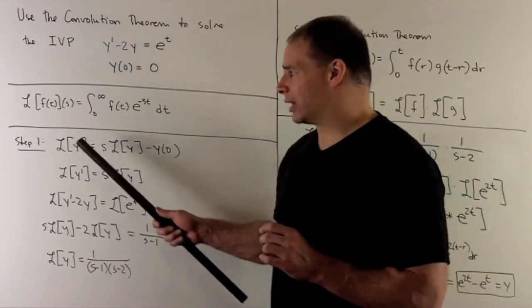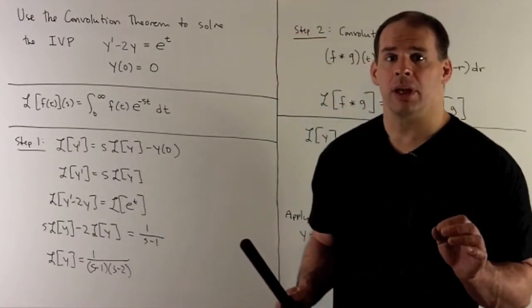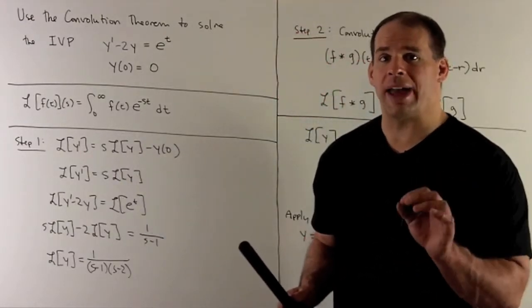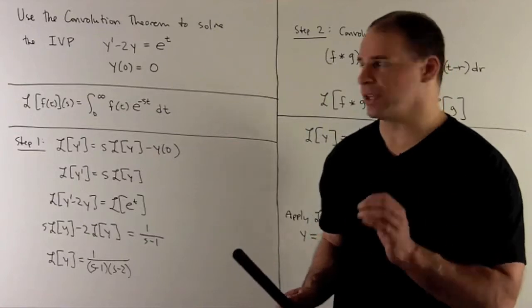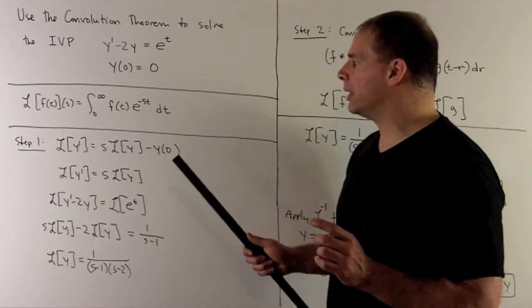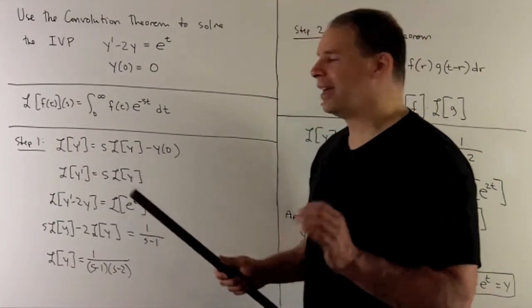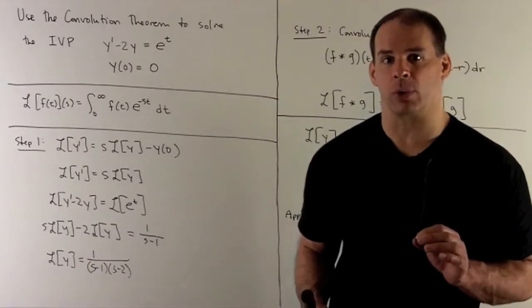That says if we take the Laplace transform of the derivative, say y prime, we get the Laplace transform of y times s minus y 0. Now, in this case, we have y 0 equals 0. So, here we'll just have the Laplace transform of y prime equal to s times Laplace transform of y.